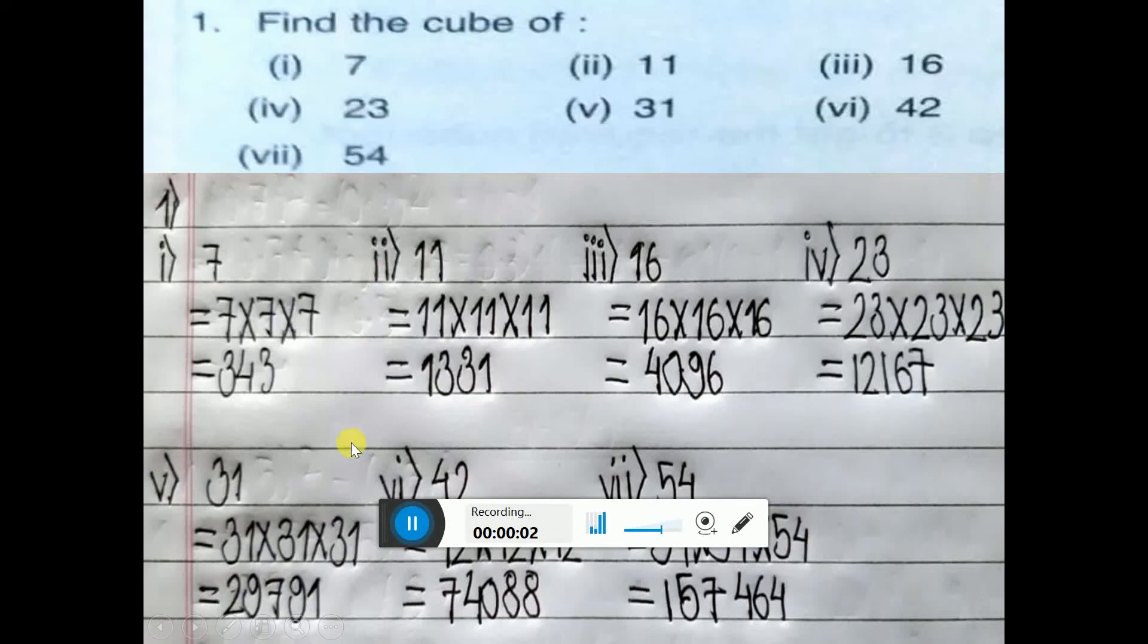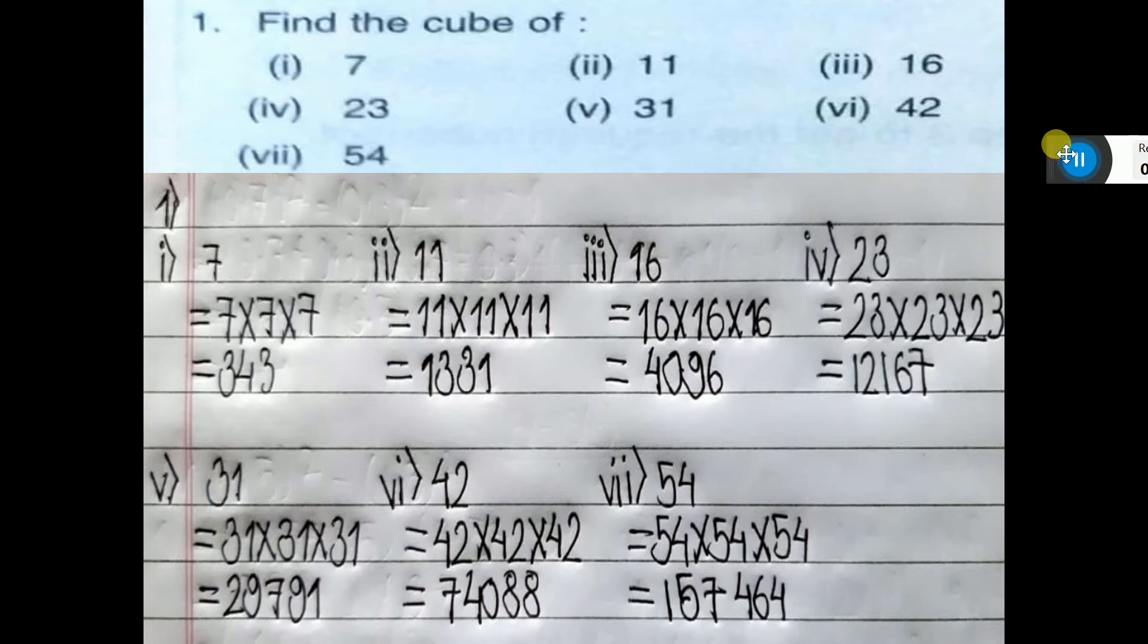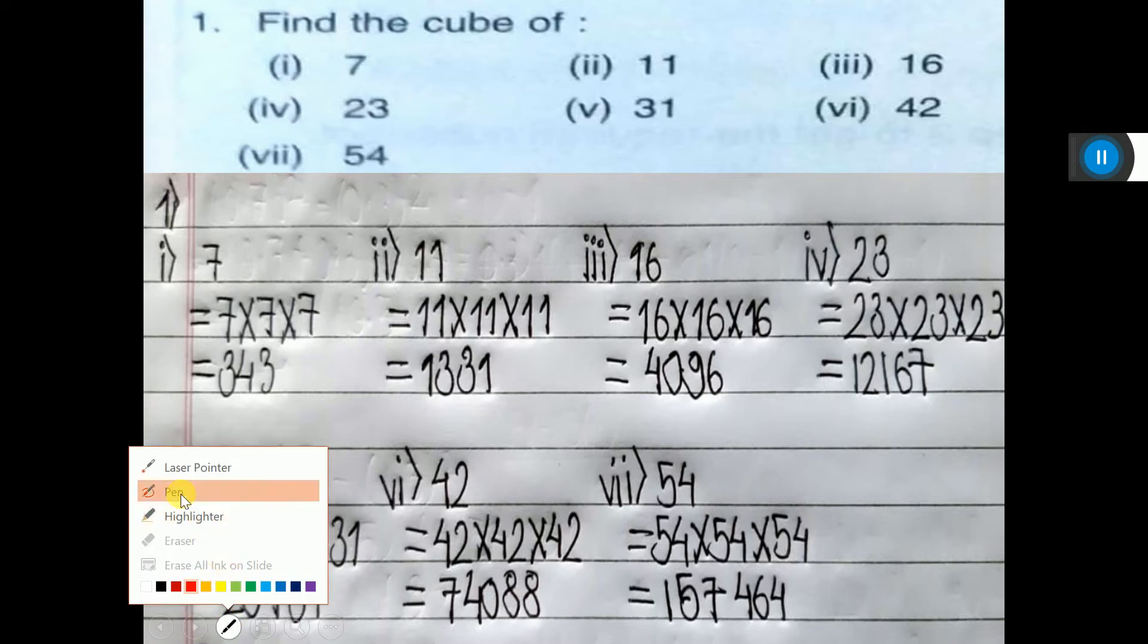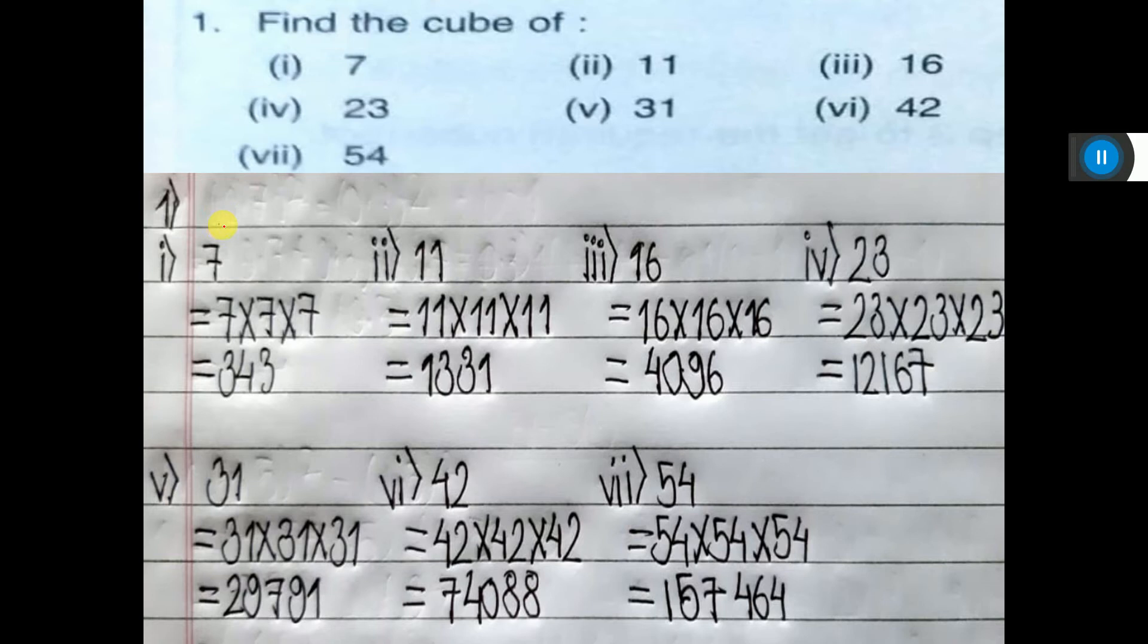Okay students, you see, we want to do sum number 1, find the cube of 7. So here, this student has not written cube. Without writing cube, he has written 7 into 7 into 7.